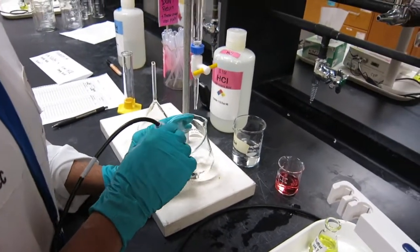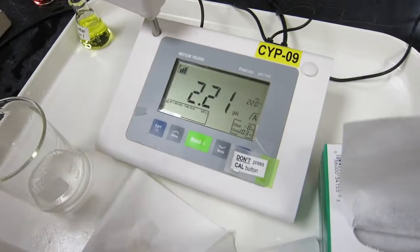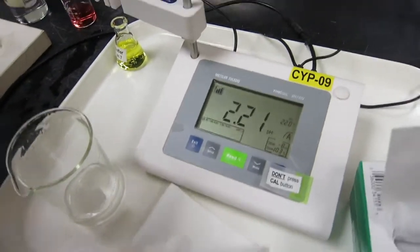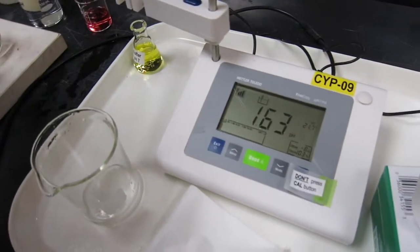We wipe it to remove any excess solution. We measure the 0.1 molar HCl. Press read. Keep it in.